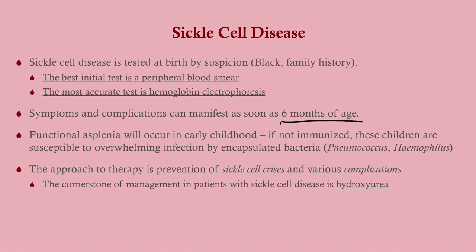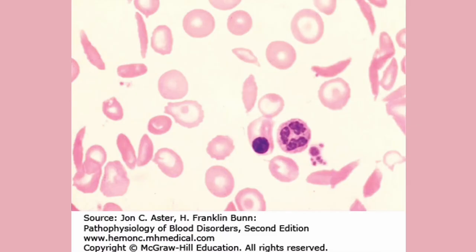Complications can manifest as early as six months of age. Functional asplenia occurs in almost every patient by early childhood, so it's critical they receive immunizations particularly against encapsulated bacteria. The approach to therapy is to manage and prevent complications, primarily by giving hydroxyurea, which increases hemoglobin F. Although hemoglobin F holds on to oxygen more avidly than hemoglobin A, it is better than having sickle cells clogging up small vessels. On peripheral smear, the sickling is unmistakable, but hemoglobin electrophoresis confirms the diagnosis.